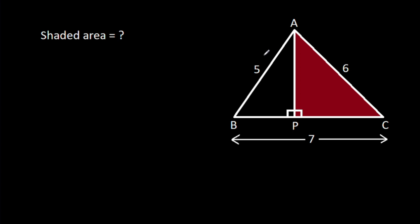In this video, we have been given that AB is 5, AC is 6, BC is 7, and AP is perpendicular on BC. Then we have to find the shaded area.